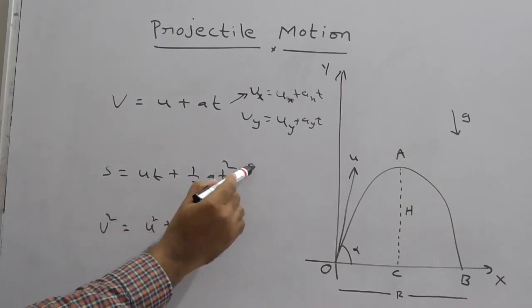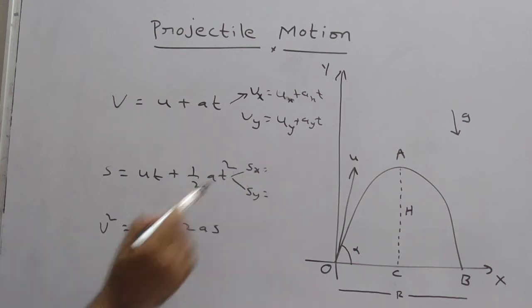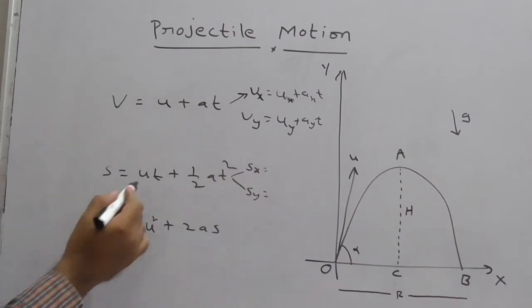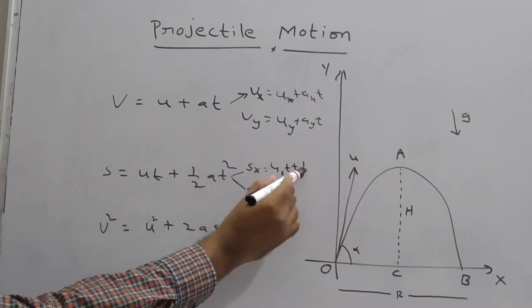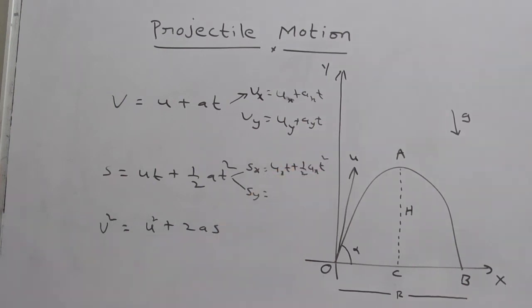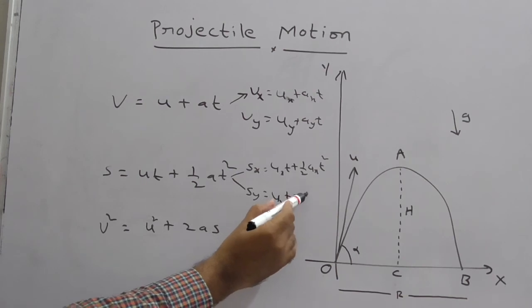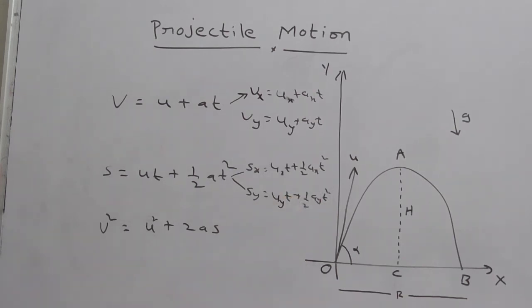Similarly for s, you can write sx and sy because it is two-dimensional. What is sx? uxt + ½axt². What is sy? uyt + ½ayt².